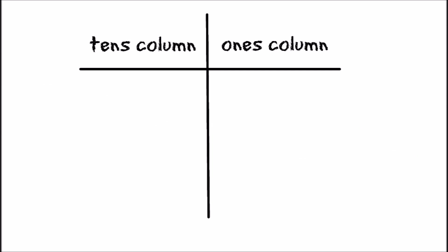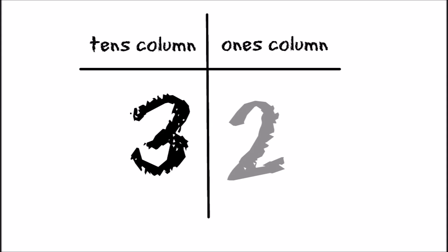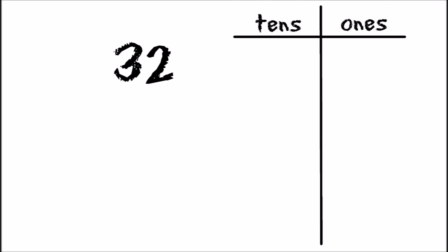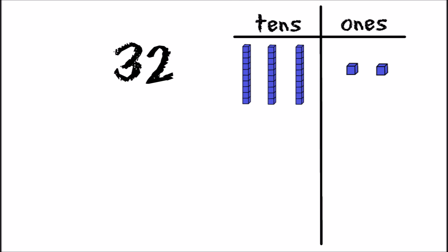So to demonstrate, if we write the number 32, then the three goes in the tens column and the two goes in the ones column. Because the two is in the ones column, it is worth two one-unit blocks. But the three is in the tens column, which means that it is worth three block stacks of ten units each. That three is really worth thirty.